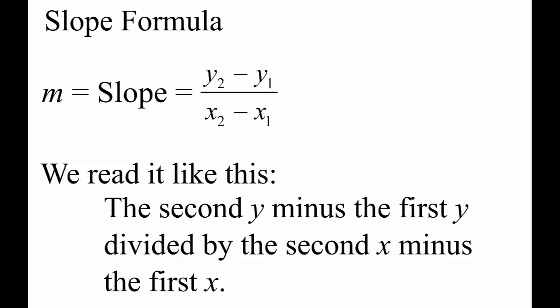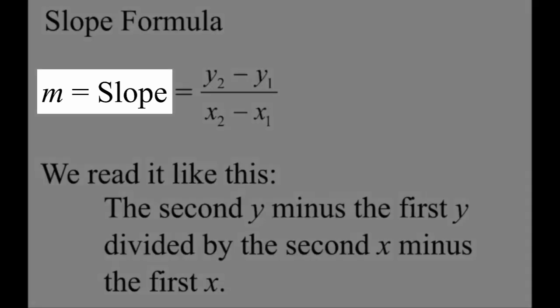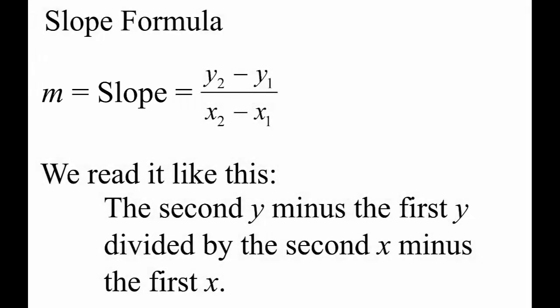Which brings us to the slope formula. It looks a bit mysterious with all of the ones and twos, but it really just says to find the change in y and the change in x by subtracting the coordinates. It's customary to abbreviate slope with the letter m. We read the formula like this: the second y minus the first y divided by the second x minus the first x.